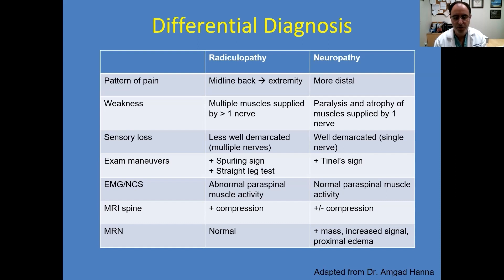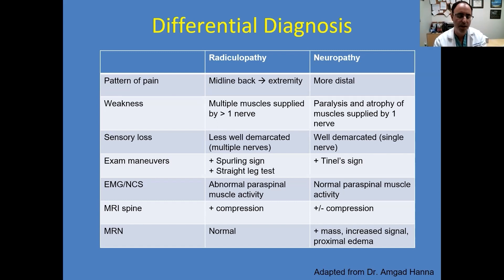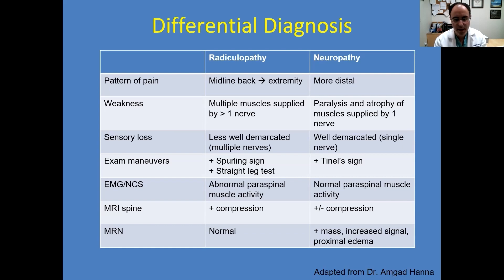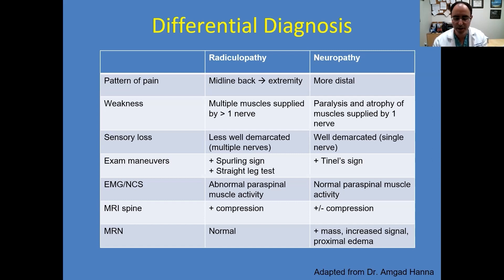For other exam maneuvers: the Spurling sign is a test for cervical radiculopathy or degenerative disease — you have the patient look to one side and apply an axial load on their head to see if it reproduces their symptoms. The straight leg test has the patient lying supine; you lift their leg with the knee extended to see if symptoms run down the leg. The Tinel sign involves tapping on a common entrapment site and looking for an electrical shock or reproduction of symptoms. Studies on the sensitivity and specificity of these tests vary, so use them as one part of your workup and take results with a grain of salt.